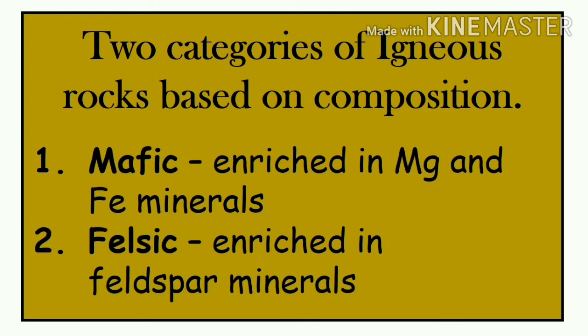We have two categories of igneous rocks based on composition — meaning the type of minerals that a rock contains. Is the rock rich in iron, rich in magnesium? So the two categories are: first, mafic — which is rich in magnesium and iron minerals.